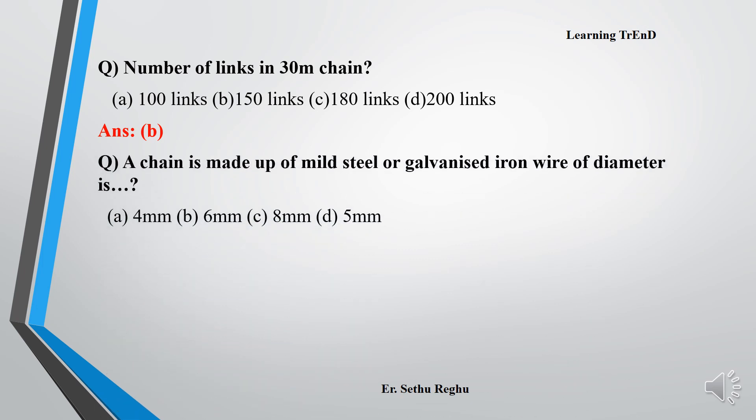Next question: A chain is made up of mild steel or galvanized iron wire of what diameter? Options are 4 mm, 6 mm, 8 mm, and 5 mm. What is the answer? Option A, 4 mm.